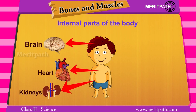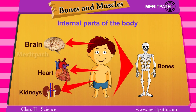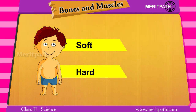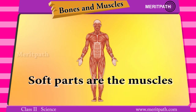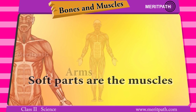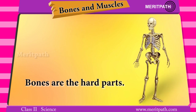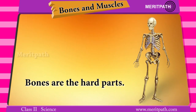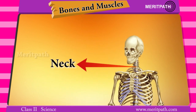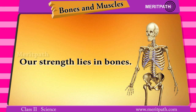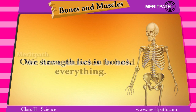When we feel different body parts, we notice that some parts are soft while some are hard. Soft parts are the muscles — for example, the arms, face, and palm. Hard parts are the bones — for example, the neck, jawline, and wrist. The strength of the body lies in the bones which hold the body.